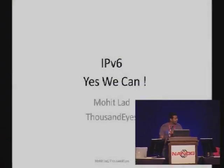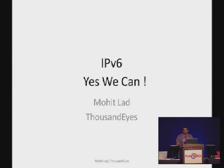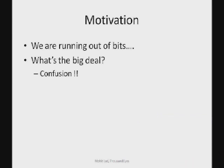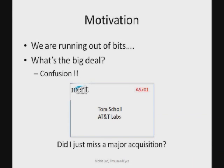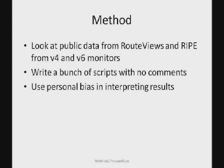This is a deck of slides I put together that will give you an idea of what to expect. We had a bunch of talks about IPv6 — now how does a researcher look at IPv6? Obviously we need a motivation, so what's the motivation? We're running out of bits. This was a few years ago when we had only three characters for AS numbers, so there was a lot of confusion because Tom Schultz from AT&T had 701 as his AS number. So what do researchers do? We look at public data from Route Views, write scripts with no comments, and use a tremendous personal bias in interpreting the results.